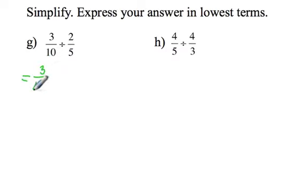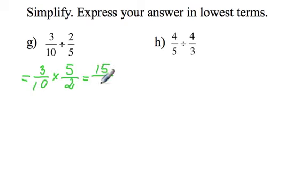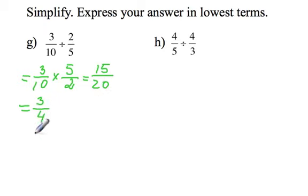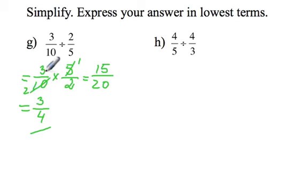More division questions — for Question G, again we are going to turn it into multiplication. The reciprocal of 2 fifths is 5 halves, and that equals 3 times 5 is 15, and 10 times 2 is 20. 15 and 20 have a common factor of 5, so 15 divided by 5 is 3 and 20 divided by 5 is 4 — the final answer is 3 quarters. A faster approach: notice that 5 and 10 divide by 5, so 5 divided by 5 is 1 and 10 divided by 5 is 2, giving 3 times 1 over 2 times 2, which is 3 quarters.